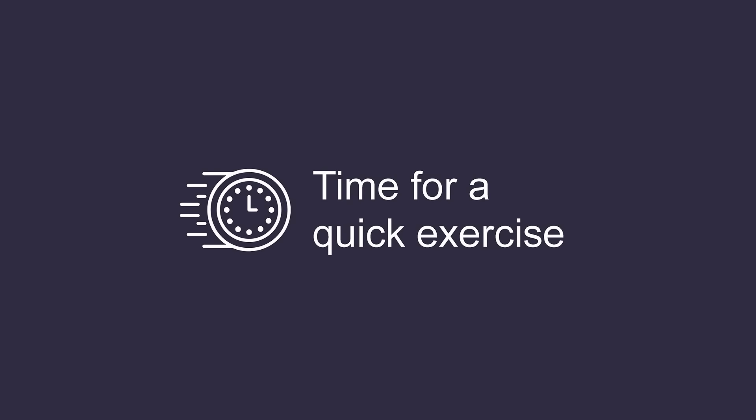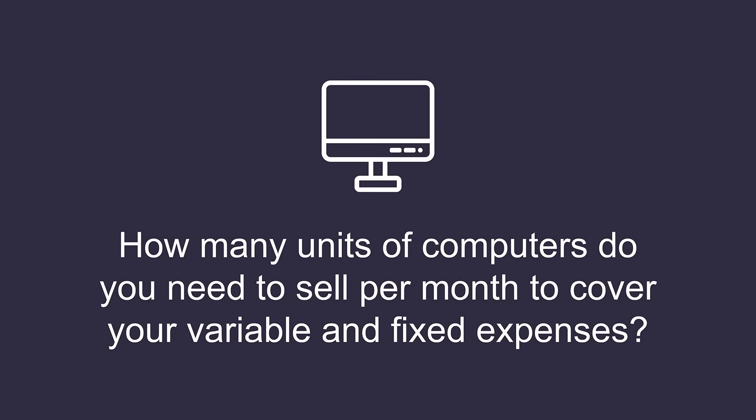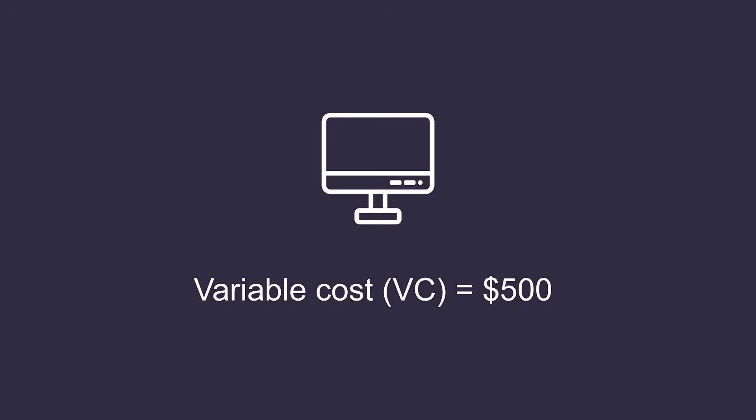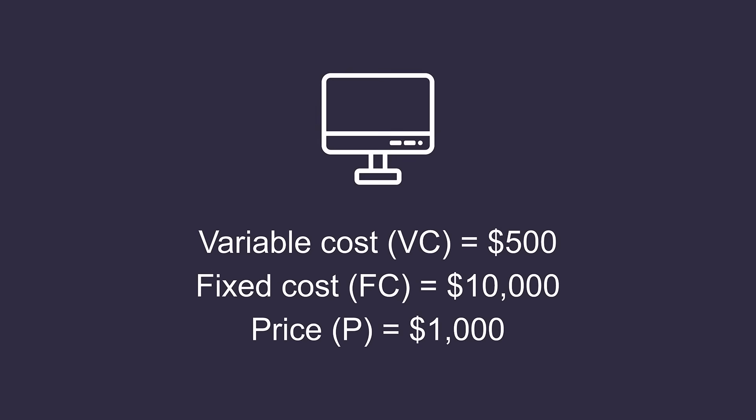Say you are in the business of selling computers. How many computers do you need to sell to cover your cost? The cost of manufacturing and assembling a computer — that is the variable cost for a single computer — is around $500. Your monthly fixed cost, that is rent, salary, janitorial services, etc., is about $10,000. You want to sell the computer at a price of $1,000. How many computers do you have to sell per month to cover your fixed expenses?